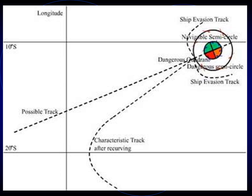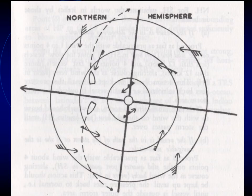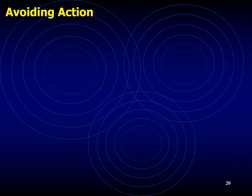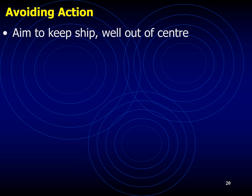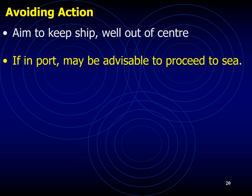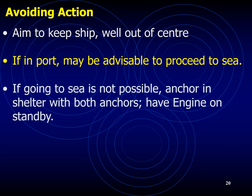There are climatologically favored regions and tracks for cyclone development in the oceans, important for vessels at sea or in port when assessing risk during cyclone season. The smallest forecast track errors occur while a system moves in a general west to west-northwest track in the Northern Hemisphere, south of the subtropical ridge. The largest errors occur during recurvature as systems first slow, then typically accelerate northeast. For avoiding action, keep the ship well clear of the center. If in port, you may be advised to proceed to sea; if not possible, anchor in shelter with both anchors and engines on standby.